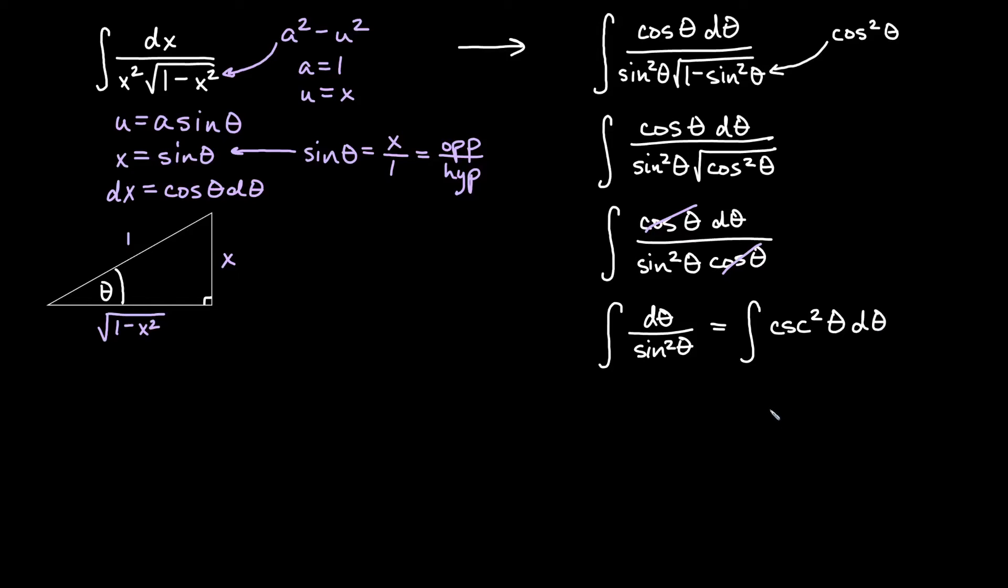And it's really close to a definition, right? You might remember that negative cosecant squared is actually the derivative of cotangent. So this is actually going to be negative cotangent of theta plus c.